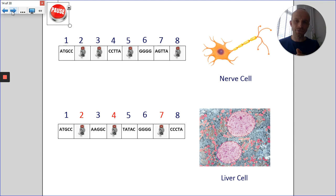So in the nerve cell, genes two, three, five, and eight are switched off. But in the liver cell, genes two, four, and seven are switched off. So the genes that are switched off is what makes the cell different or unique, if you like.